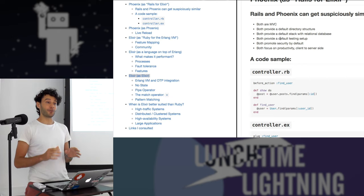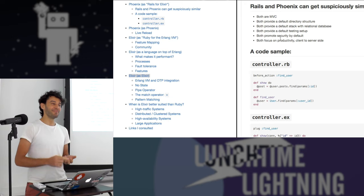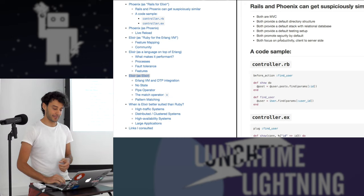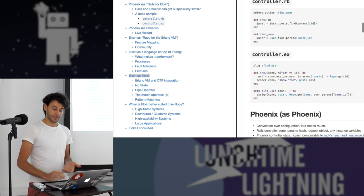Phoenix and Rails feel surprisingly similar when you start — it's suspicious. Both are MVC. Both give you a default directory structure, testing, and a database — PostgreSQL by default in Phoenix. Both focus on security and productivity, front-end and back-end. So they look very similar with very similar conventions.